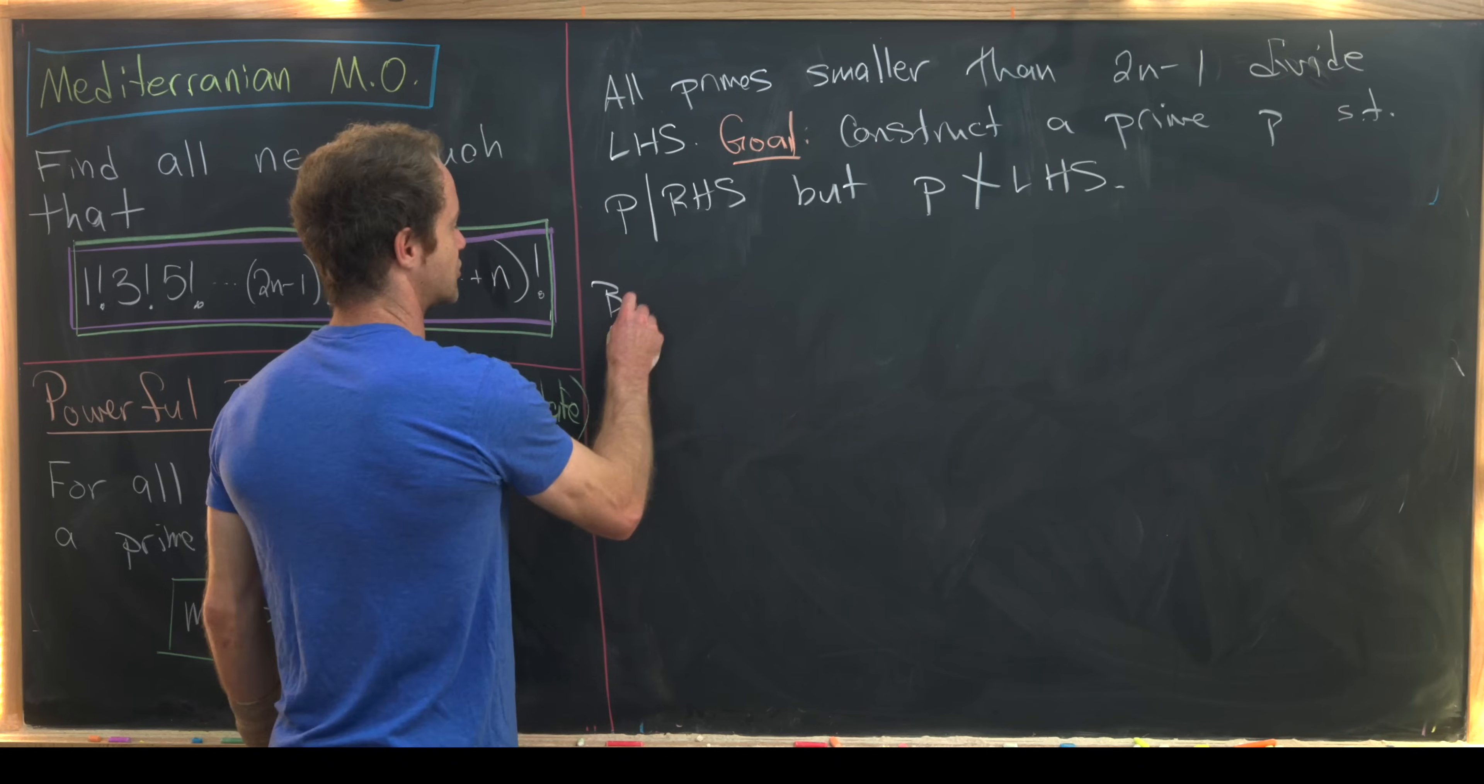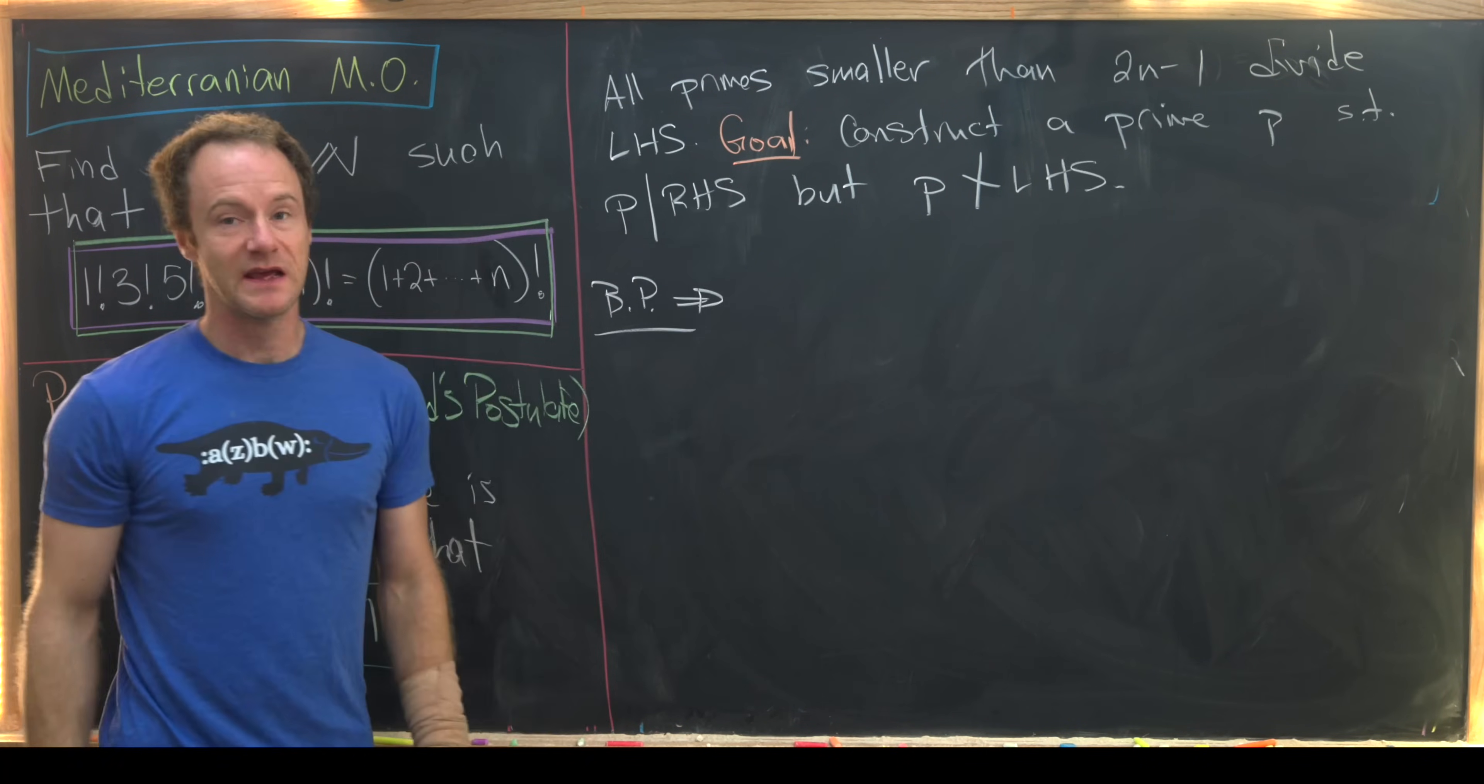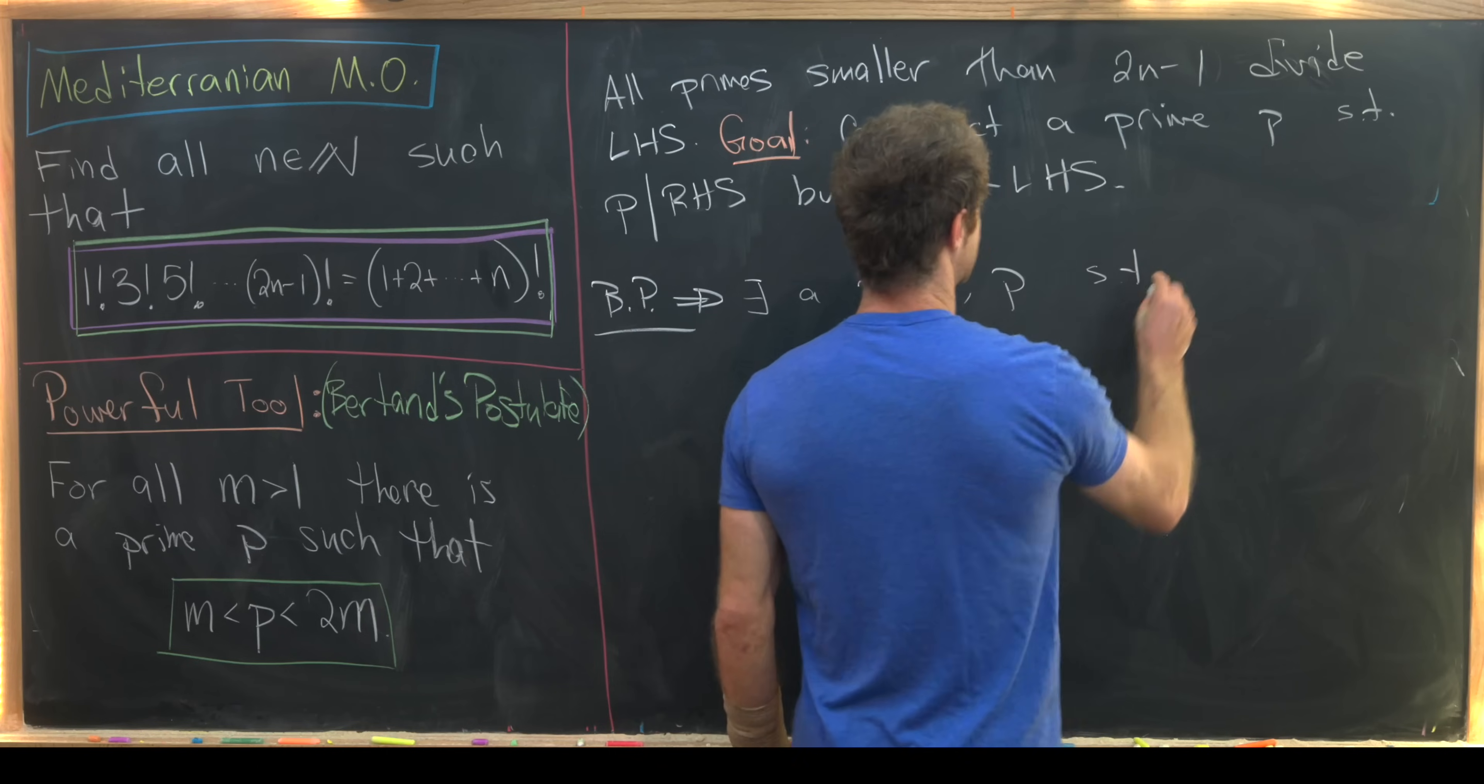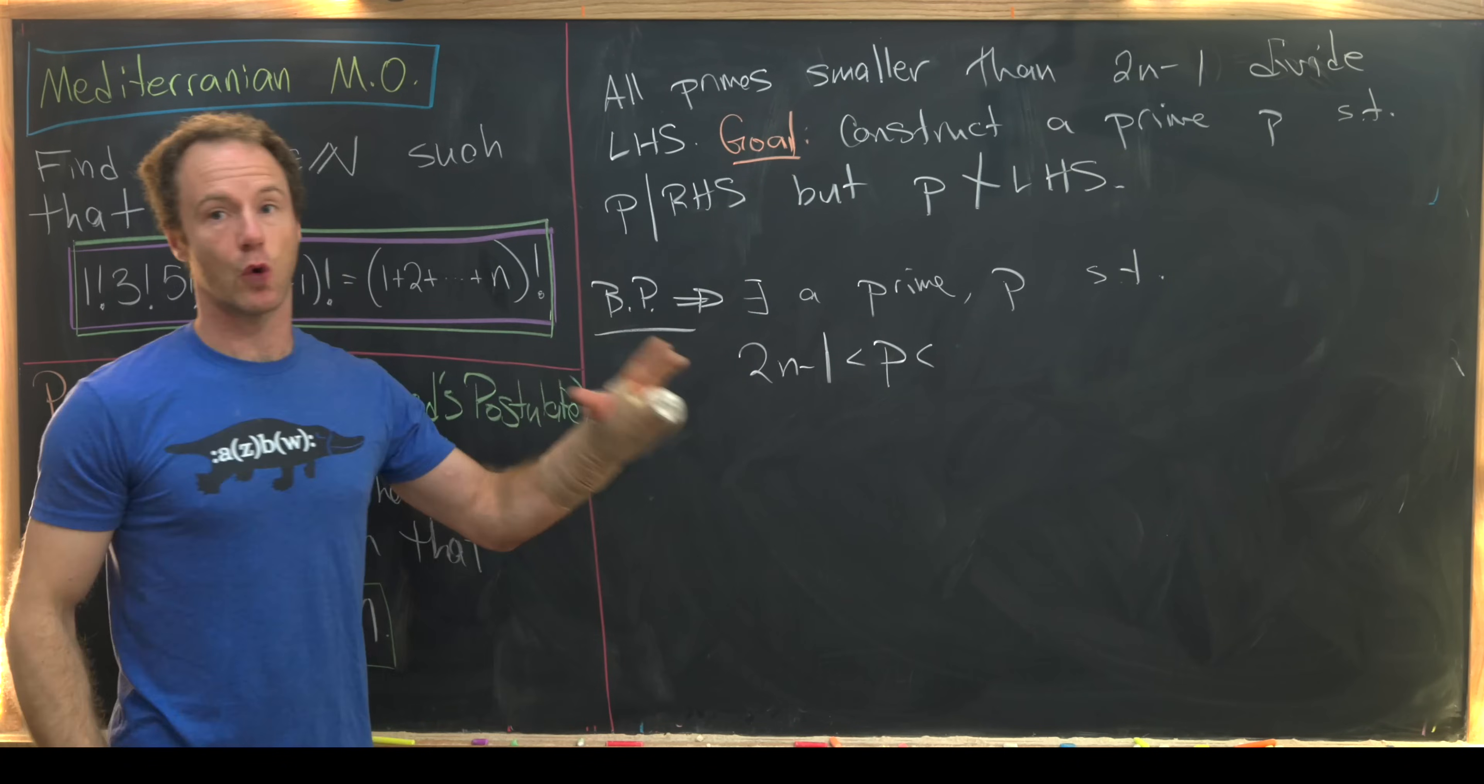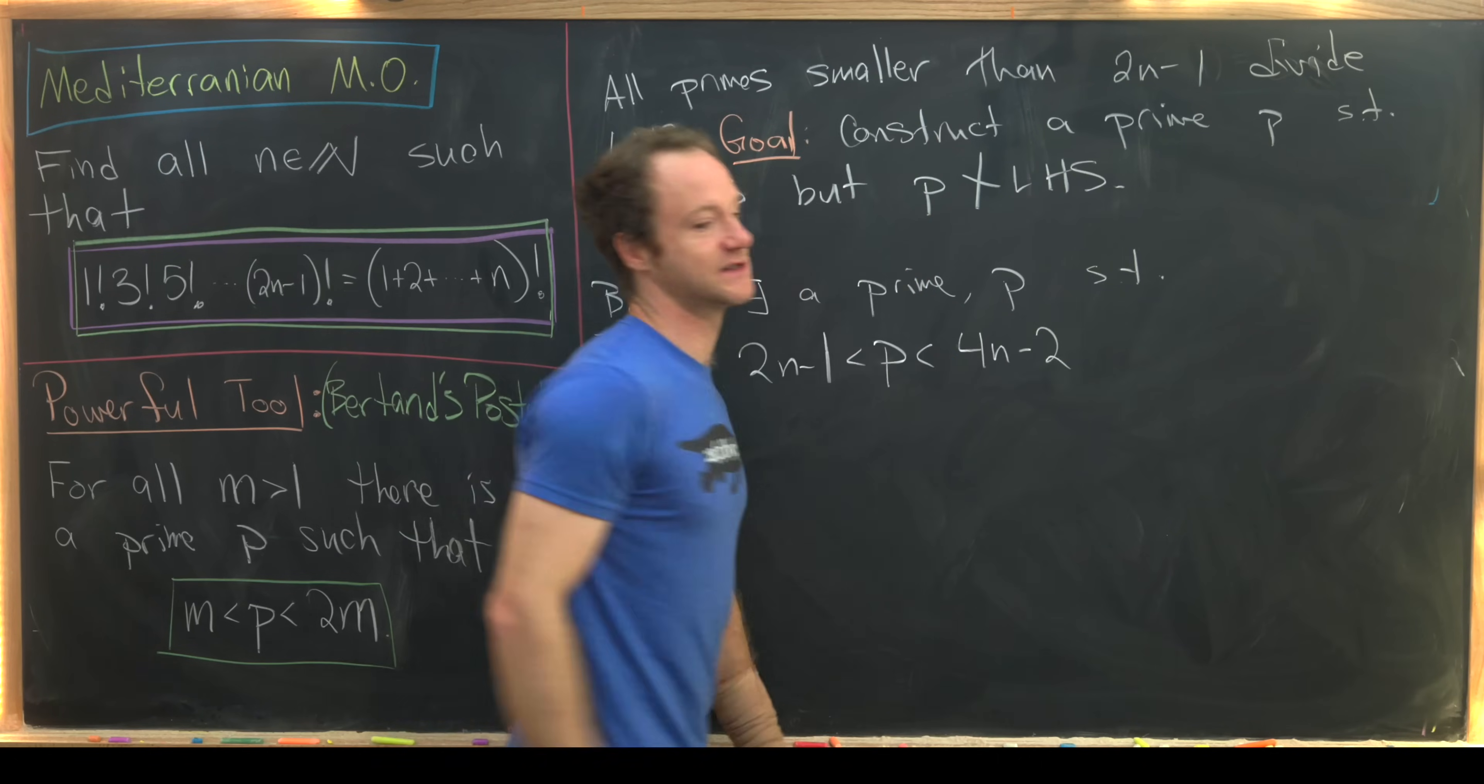Bertrand's postulate applied to our problem implies there exists a prime, again I'll call it p, such that we know that p lives between 2n minus 1 and twice 2n minus 1, which is 4n minus 2.